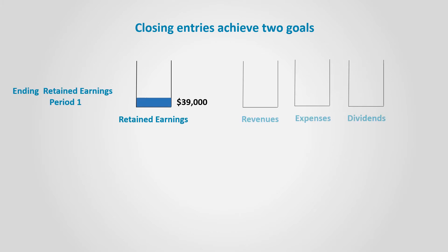It is clear from the previous illustration that closing entries serve two purposes. The first is that the retained earnings account is updated. Secondly, the temporary accounts — represented in revenues, expenses, and dividends — are reset to be ready for the new period.